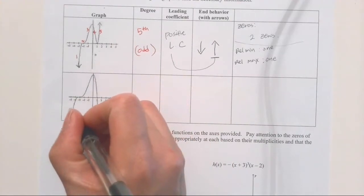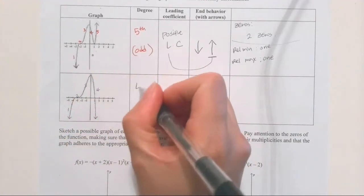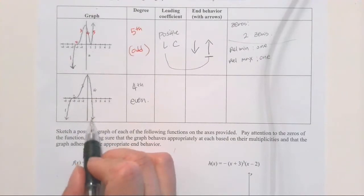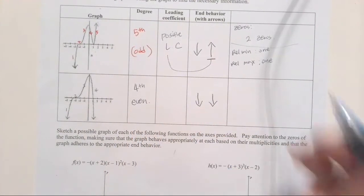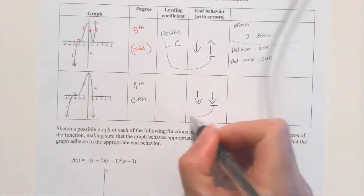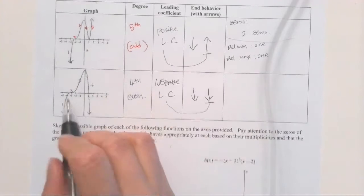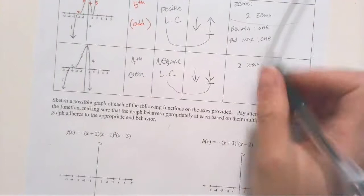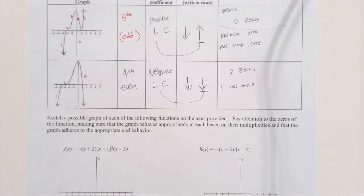This one — let's count: one, two, three, four — four directions, so it's the fourth degree, which is even. What's the end behavior? Going down, going down — both going down. Good, because even degree means both go the same direction. For the leading coefficient — look at the right end, it's going down, so it's going to have a negative leading coefficient. How many distinctive zeros? There are two zeros. There is only one relative maximum — there's no relative minimum, no bottom of the dip.